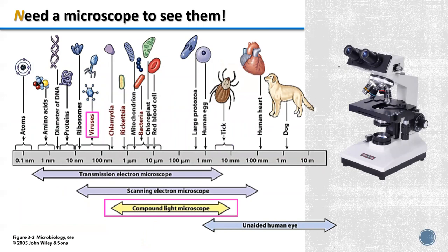If we would like to look at them, we will need an instrument called a microscope. A microscope is a laboratory instrument used to magnify objects that are too small to be seen by the naked eye. Mostly compound microscopes are used in the normal laboratory, which consist of at least two lenses.